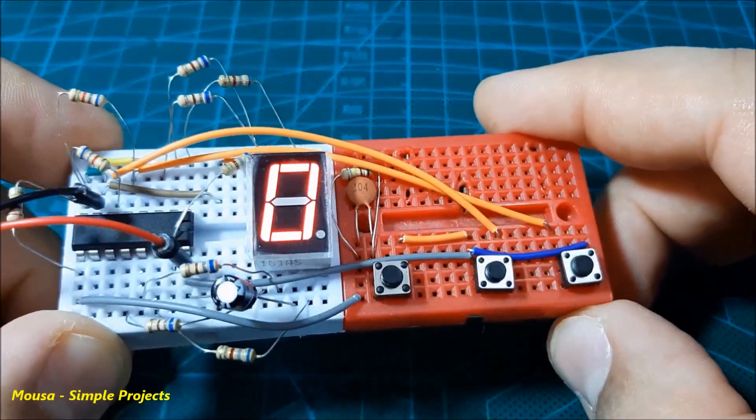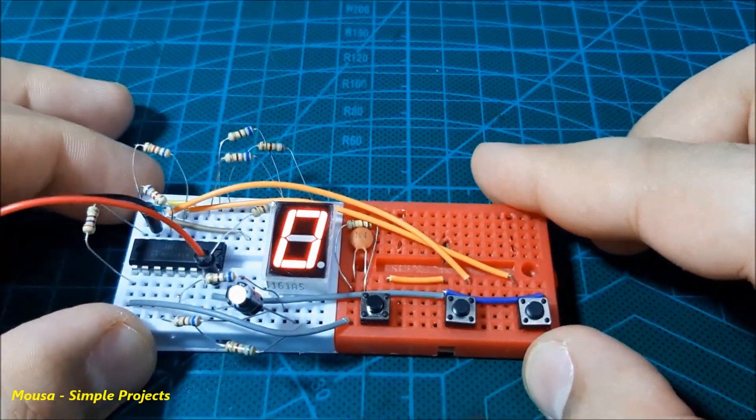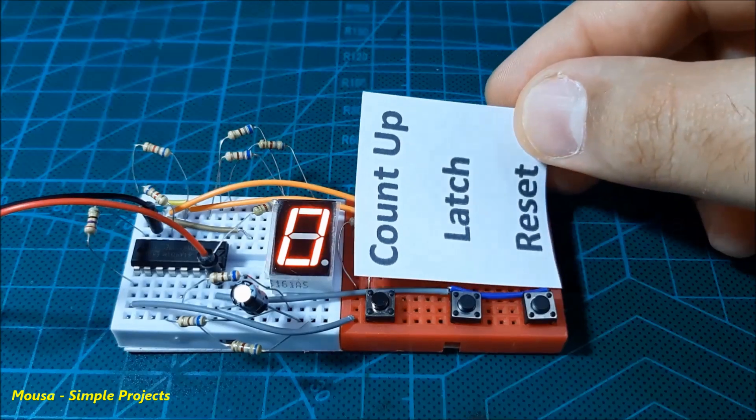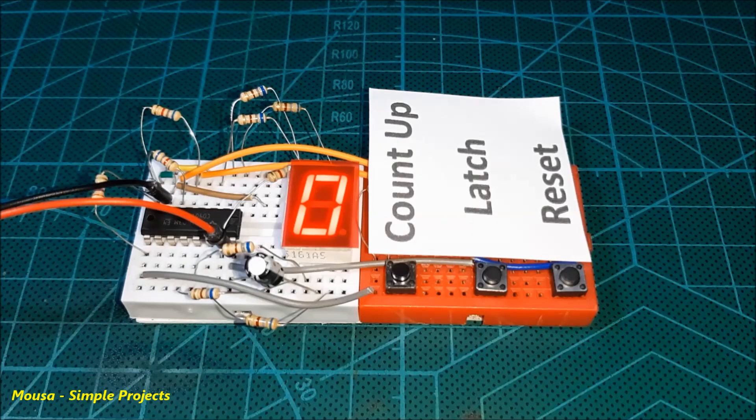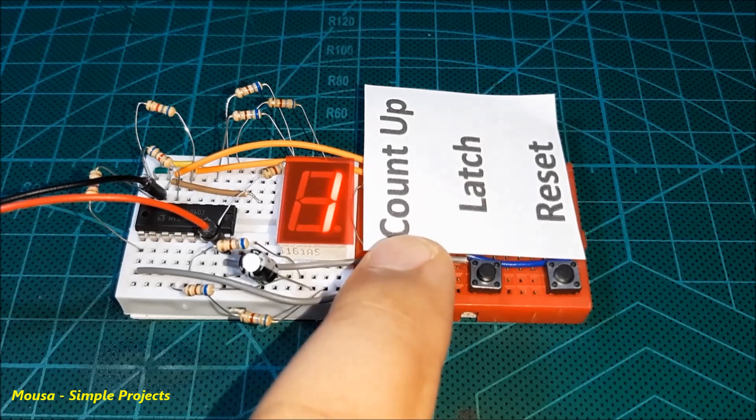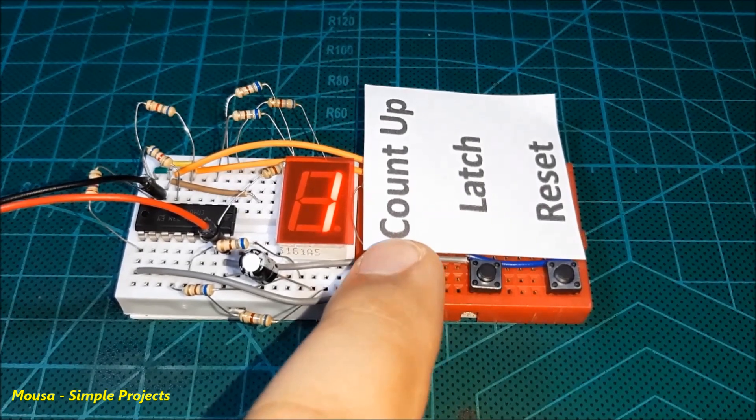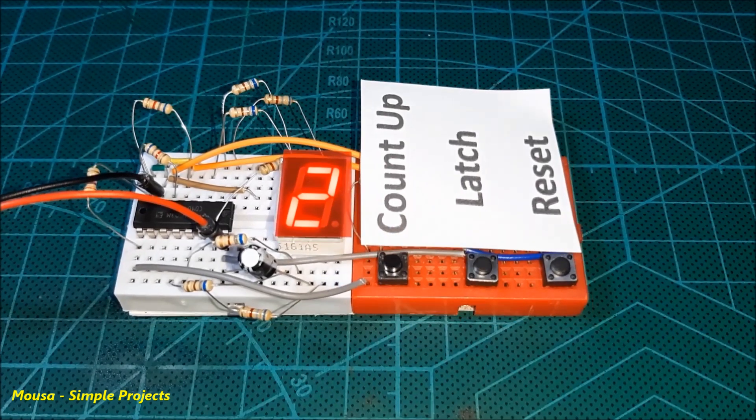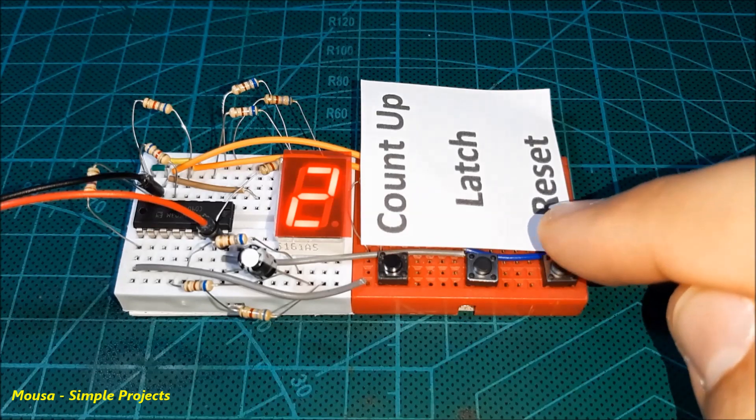This IC also has a countdown function but we don't use it in this project. When I connect pin number nine of the IC to the VCC using this push button, the seven segment counts up. And by connecting pin number five to the VCC, the seven segment goes back to zero.